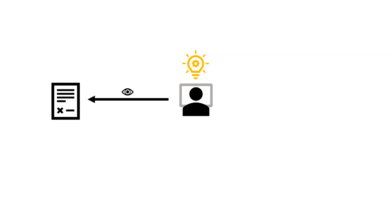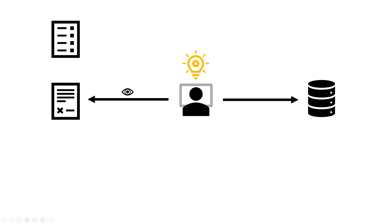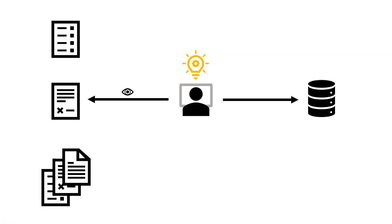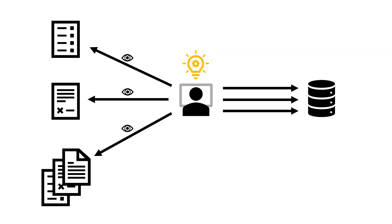Now, because Bob is smart, he'll also know what to do with that information. And what he wants to do is to enter that information into another system, in this case, a database. And Bob is so intelligent that he can actually look at many types of documents, even documents that contain many pages. And he can extract the right information from those pages just by looking at them and then enter them into whatever system is relevant for that information.